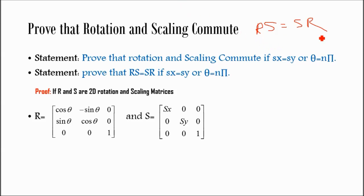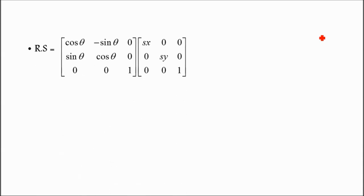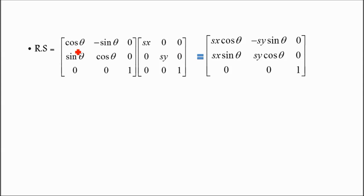We have to prove RS equals SR. Taking the left-hand side, RS means rotation multiplied by scaling. Multiplying the rotation matrix by the scaling matrix gives: sx·cos-theta, minus sy·sin-theta, 0; sx·sin-theta, sy·cos-theta, 0; 0, 0, 1.